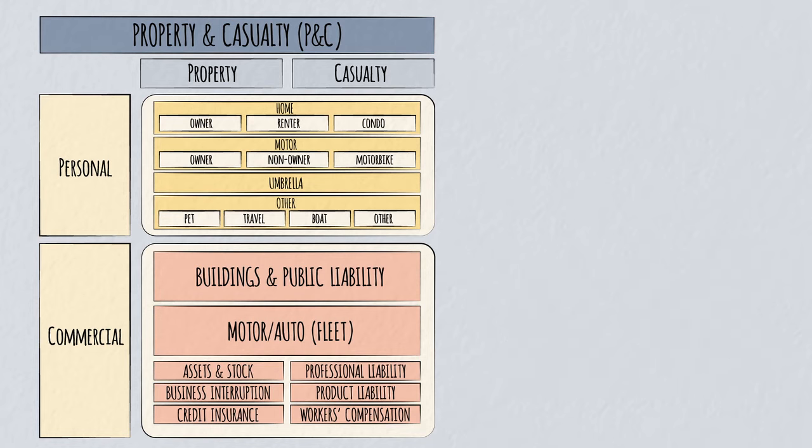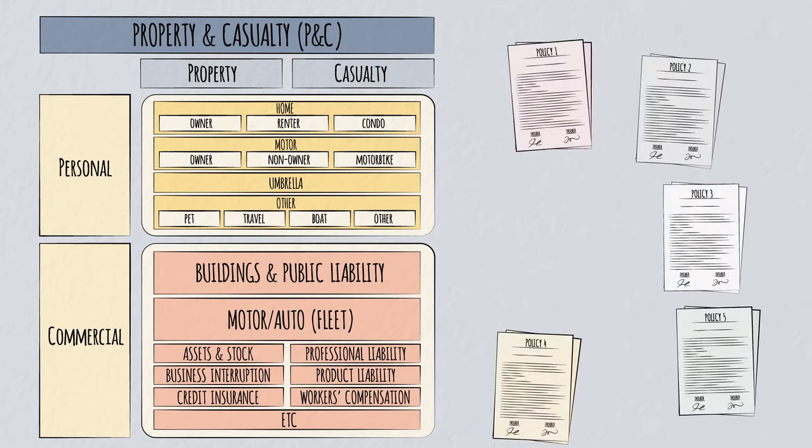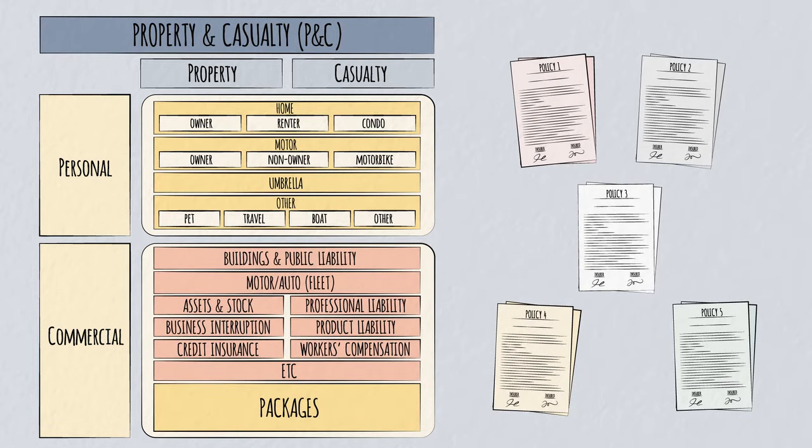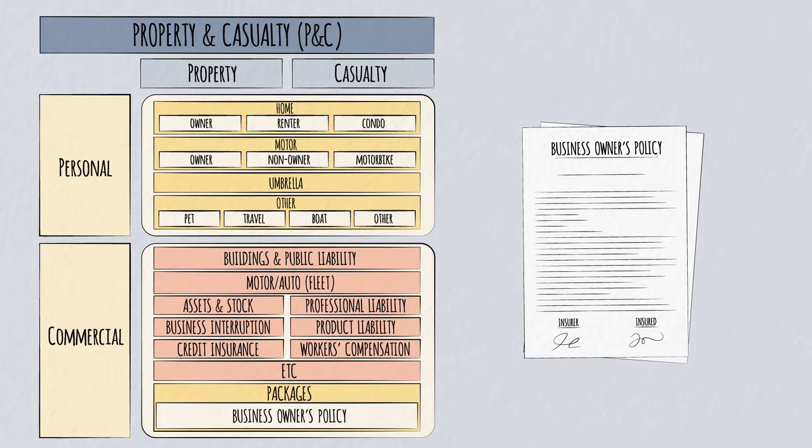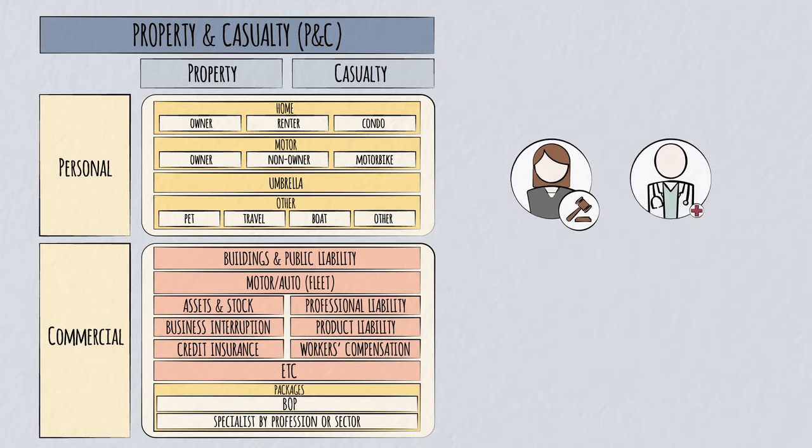Some further risks are covered by specialty policies. Cover for these risks can be sold standalone but are often packaged into single policies. A standard business owner's policy or BOP in the U.S. includes basic risks for small businesses. Professions like lawyers and doctors with high value industry-specific risks have them packaged into their own specialist policies, as do companies in specialist sectors such as aviation and marine.